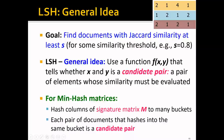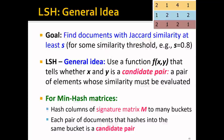Recall that our goal is to find documents with Jaccard similarity at least s. For example, we can set this similarity threshold to 0.8. The general idea of LSH is to use a function f that tells whether or not x and y is a candidate pair. Note that this is not final yet — this is only a candidate, so we still have to go back to every candidate pair to evaluate them.